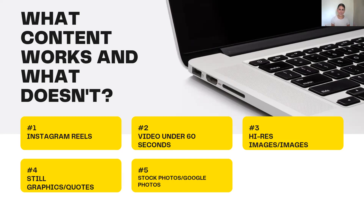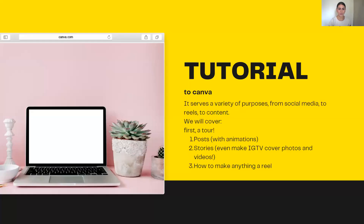The fifth and least performing thing is going to be stock photos and Google Photos. There are a lot of websites where you can get free stock photos, and you can go on Google Images and download quotes. I see a lot of people doing this on Instagram and Facebook, and that is going to get you the least engagement. Generally speaking, stock photos and Google Photos don't do very well. So that's laying out the outline for today.